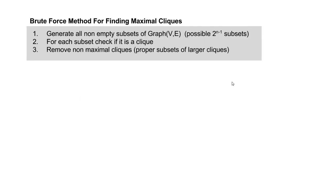We can find a brute force method for finding a maximal clique. First, we generate all non-empty subsets of graph G=(V,E) — there are 2^n - 1 possible subsets, which is a large number. For each subset, we check if it is a clique, then remove non-maximal cliques that are proper subsets of larger cliques.